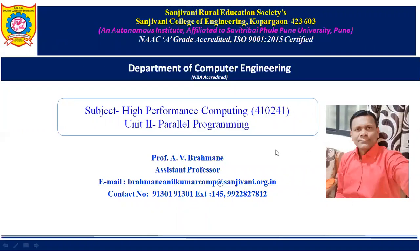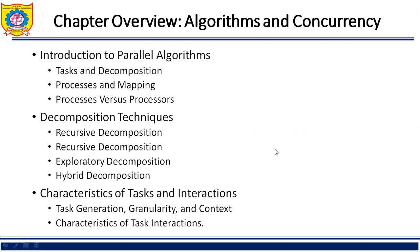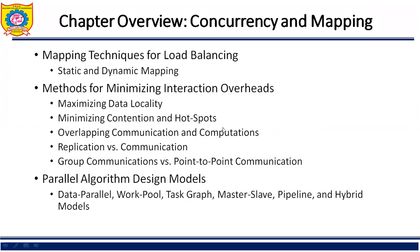Unit number 2 contains Introduction to Parallel Algorithms, including task and decomposition, process and mapping, process versus processor, and decomposition techniques. The four decomposition techniques are recursive decomposition, speculative decomposition, exploratory decomposition, and hybrid decomposition. Also covered are characteristics of task and interaction, including task generation, granularity, and context.